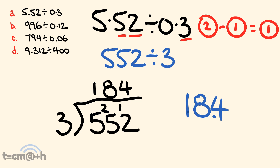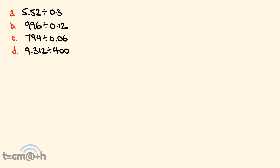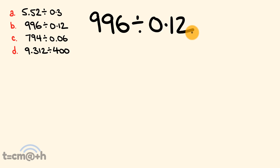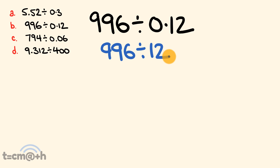Our answer is 18.4 — pretty easy, right? Just follow those steps. Now let's get to our second example. We have 996 divided by 0.12, and we start exactly the same way by ignoring those decimals. So we rewrite it as 996 divided by 12, and that's what we'll work out first.